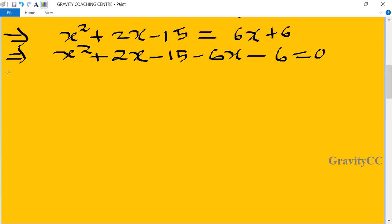Implies that x squared. 6x minus 2x, so after subtracting we get minus 4x, then 15 and 6 is minus 21 equal to 0.